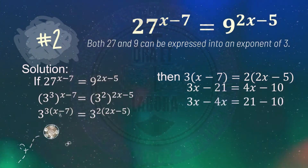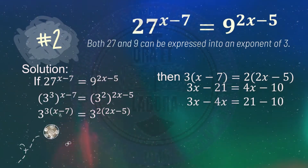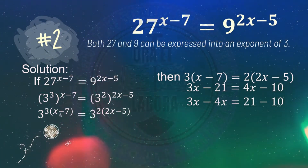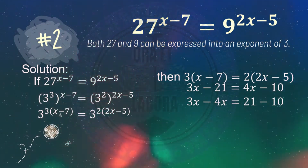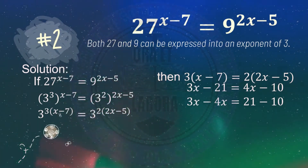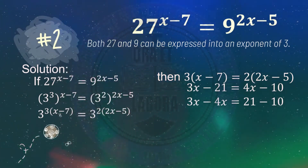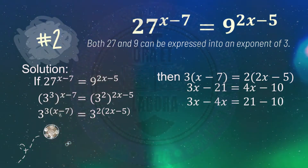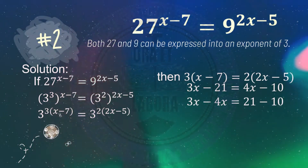Transposing 4x to the other side and transposing negative 21 to the other side of the equation, we get 3x minus 4x equals 21 minus 10. Simplifying, 3x minus 4x is negative x.